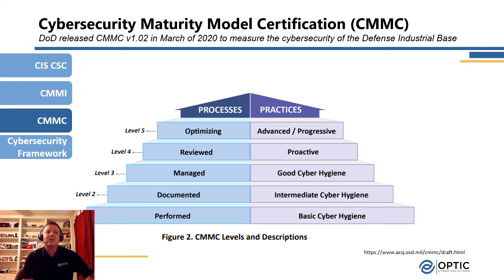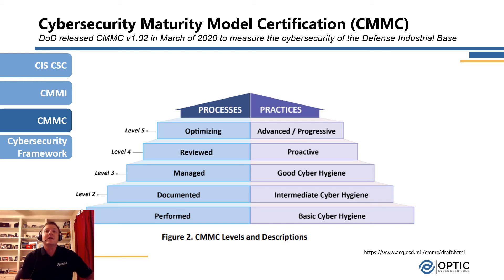The levels are very similar to CMMI but differ slightly in nuance. The general process-level capabilities are very similar between the two. CMMC also has basic cyber hygiene capabilities at level one with 17 practices that need to be implemented, growing to 130 practices for good cyber security hygiene, and all the way to 170 different practices that need to be in place for a level five or advanced cyber security program.